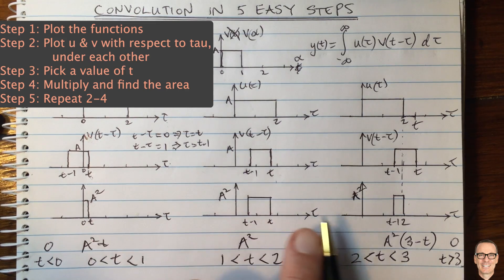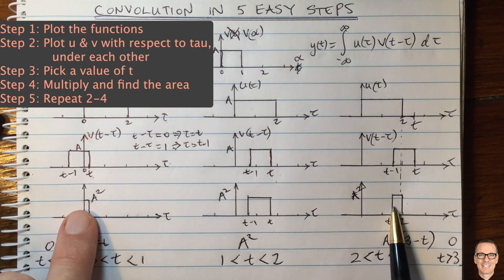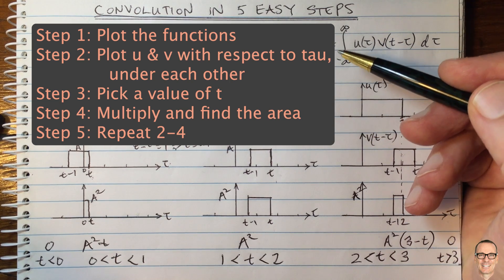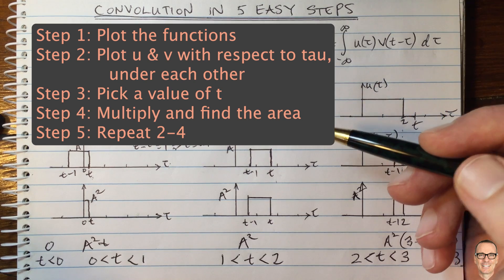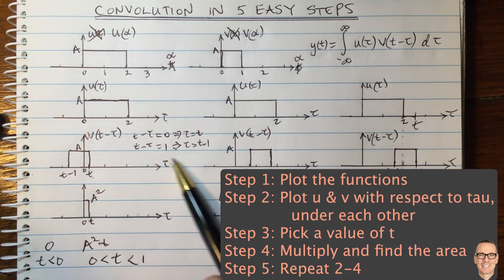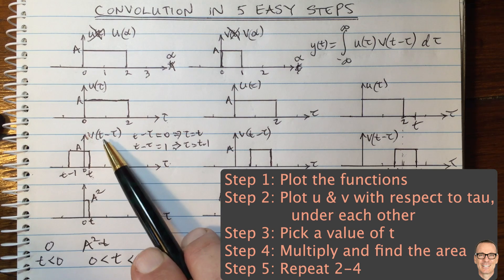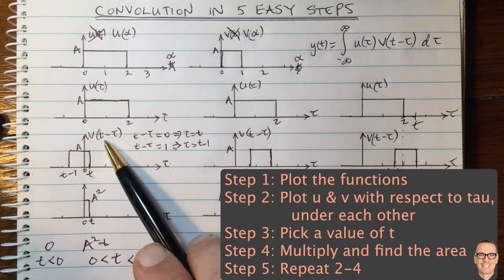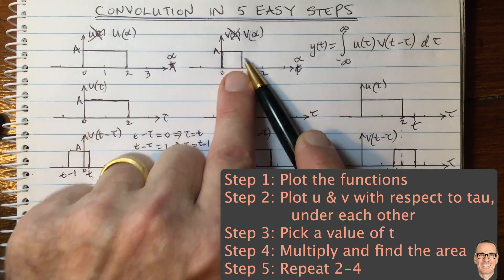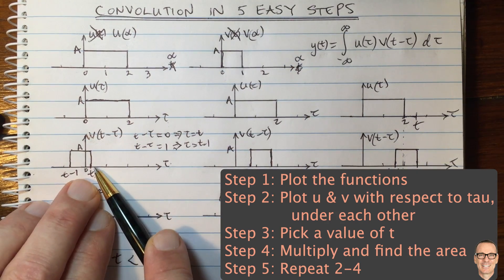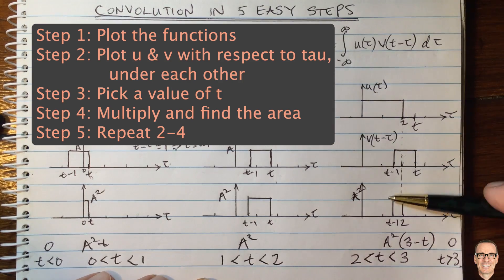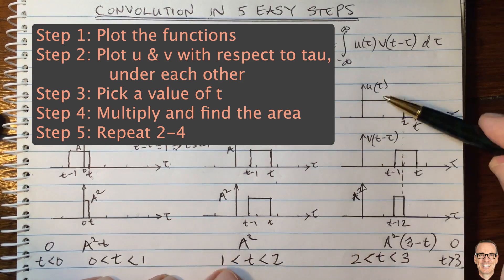By picking particular values of t and drawing them out, you can see the cases needed to get the complete answer. Let's revise the five steps. Step one: draw the functions — absolutely critical. Step two: draw them underneath each other as a function of tau, using the 'thing in the brackets' technique to work out where key features go. Step four: multiply them together and find the area. Step five: repeat for all different values of t.